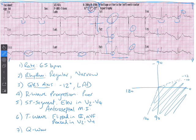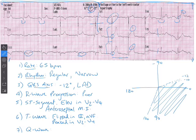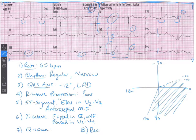Step seven is Q waves — we're looking for scars on the heart or evidence of new MIs, that drop-off-the-cliff shape with the Q wave. I'm not seeing any that are very obvious. We'll go over Q waves more thoroughly when we have a 12-lead that shows them in future videos. Step eight is reciprocal changes.